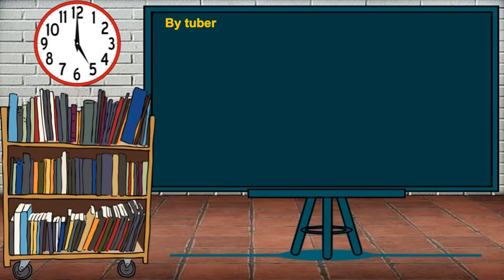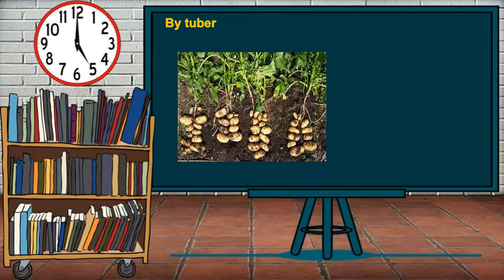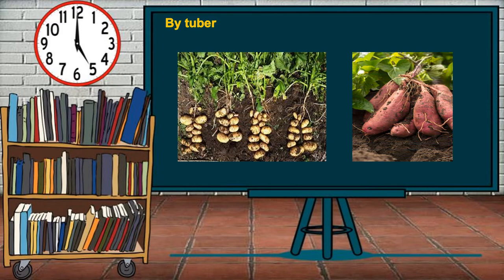Another natural method is by tuber — a fleshy portion of the underground stem that has buds. In this method, new plants grow from the buds, the eye-like structures on tubers. Examples are potatoes and kamote.